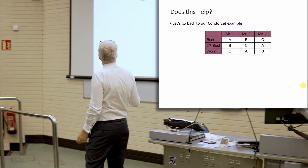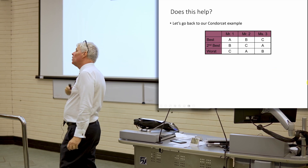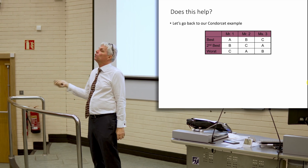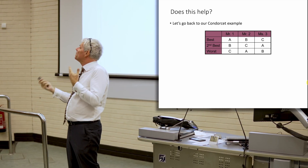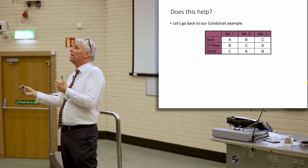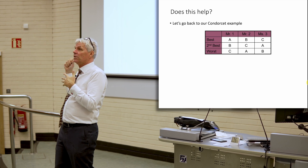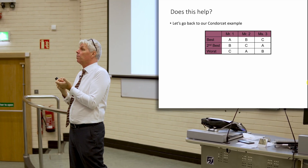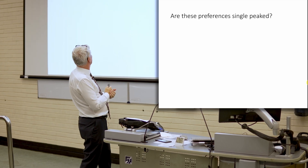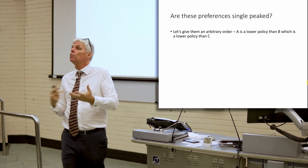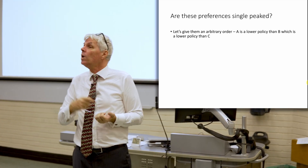So let's go back to our Condorcet example and see whether that satisfies single-peaked preferences. We had Mr. 1 liked A better than B better than C; Mr. 2 liked B better than C better than A; and so on. We want to see whether those can be represented with single-peaked preferences. Or, in constructing this special case, did I have to violate single-peaked preferences? To do this, we need to impose a natural order — and in that example, there was no natural order.